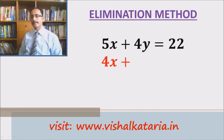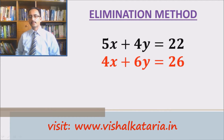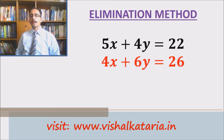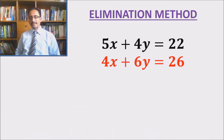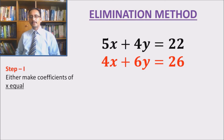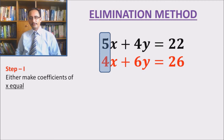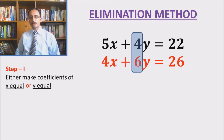The equations are: 5x plus 4y equals to 22 and 4x plus 6y equals to 26. Step number 1 in the elimination method is either we make the coefficients of x equal in both equations — in the first equation the coefficient of x is 5 and in the second it is 4 — or we make the coefficients of y equal. In the first equation the coefficient of y is 4 and in the second it is 6. In this particular example I am going to make the coefficients of y equal and then eliminate.